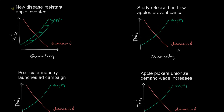Let me draw the entire curve. Obviously, if we now have disease-resistant apples, even our minimum price to start producing apples is lower. Now when the supply curve shifts to the right, what happens to the equilibrium price? Well, our old equilibrium price was right over here, and this is our new equilibrium price. We're assuming that demand has not changed at all. Our new equilibrium price is lower — so the price went down.